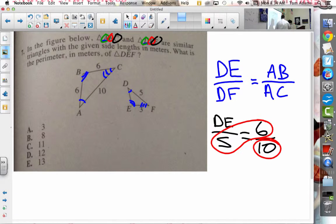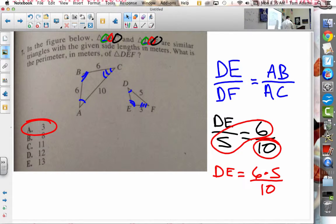So I could say that DE is equal to 6 times 5 divided by 10. Well, 6 times 5 is 30. 30 divided by 10 is 3. Is that the right answer? No. No? Perimeter.